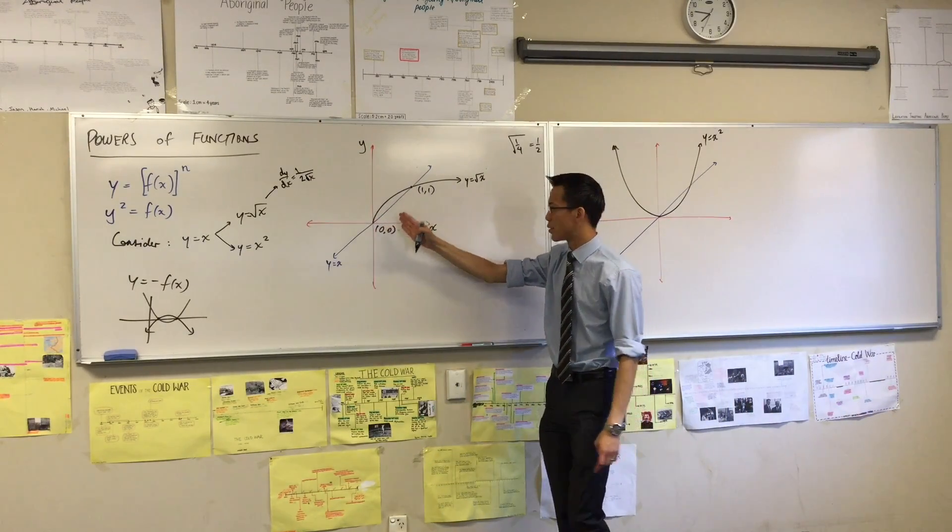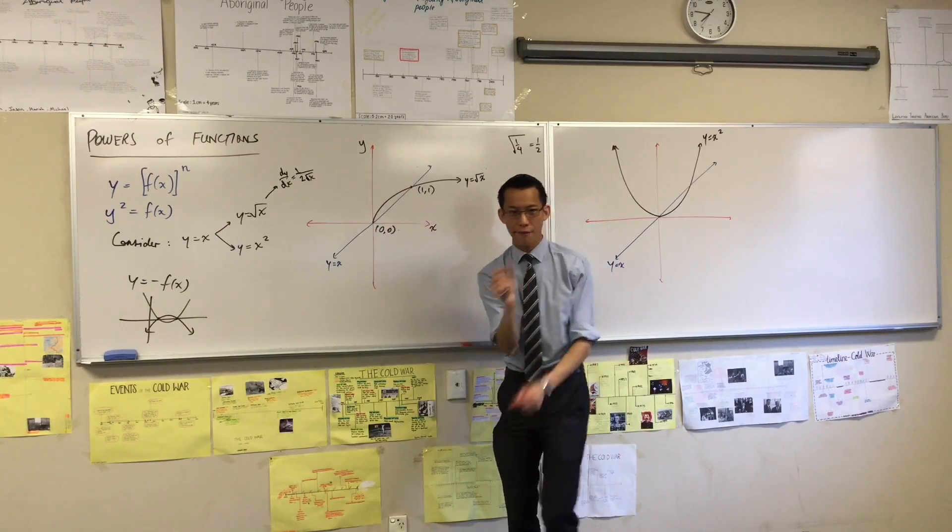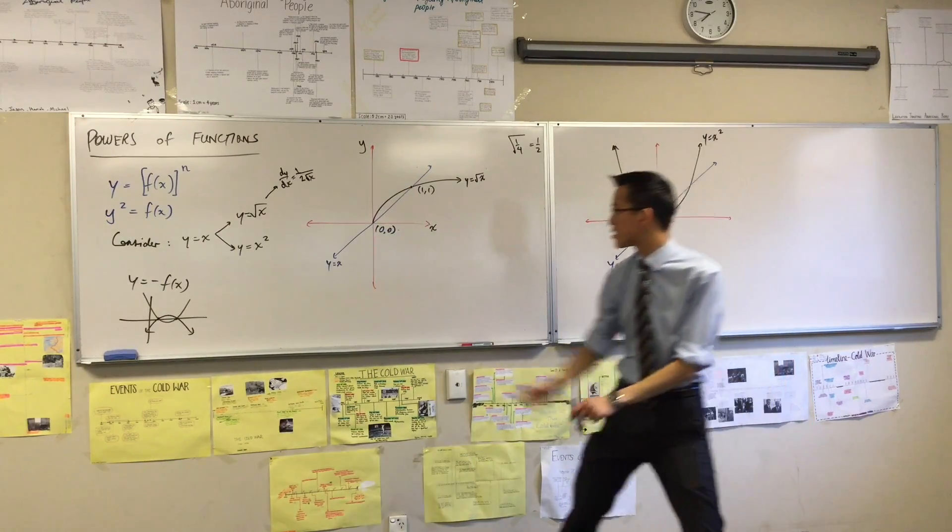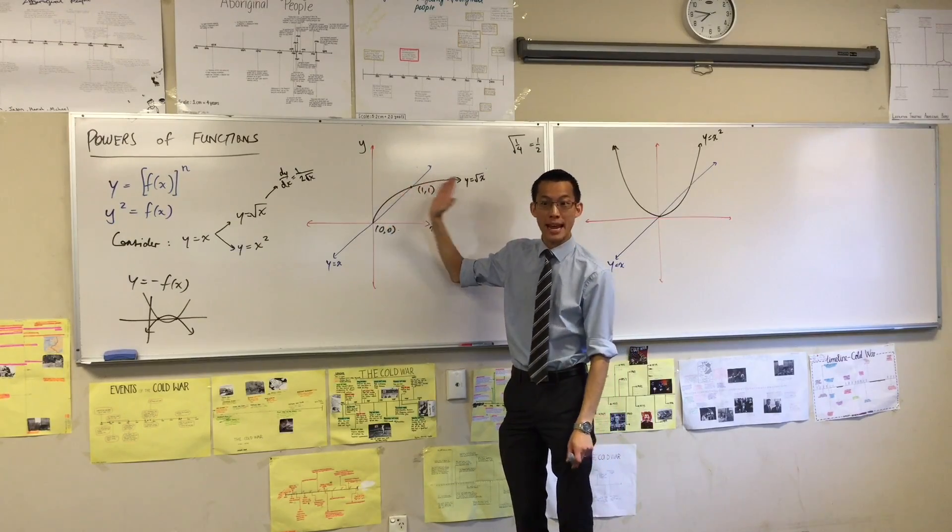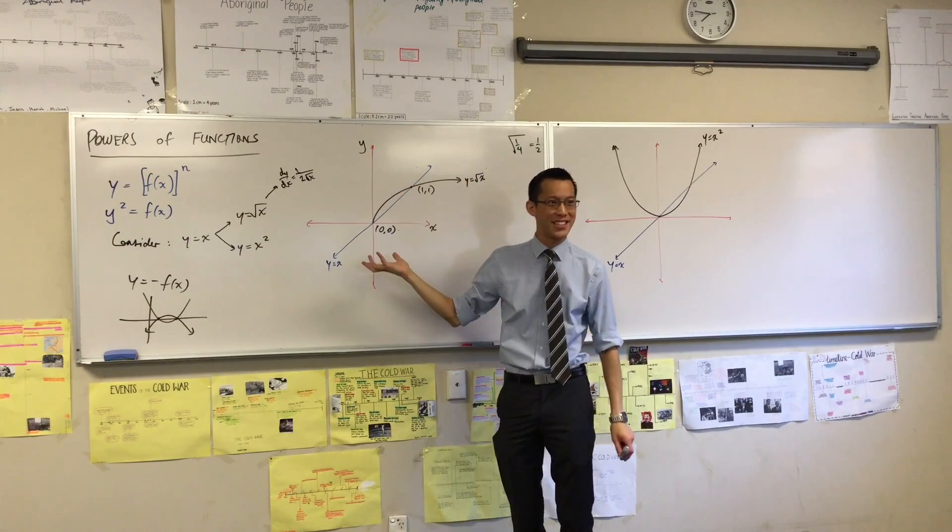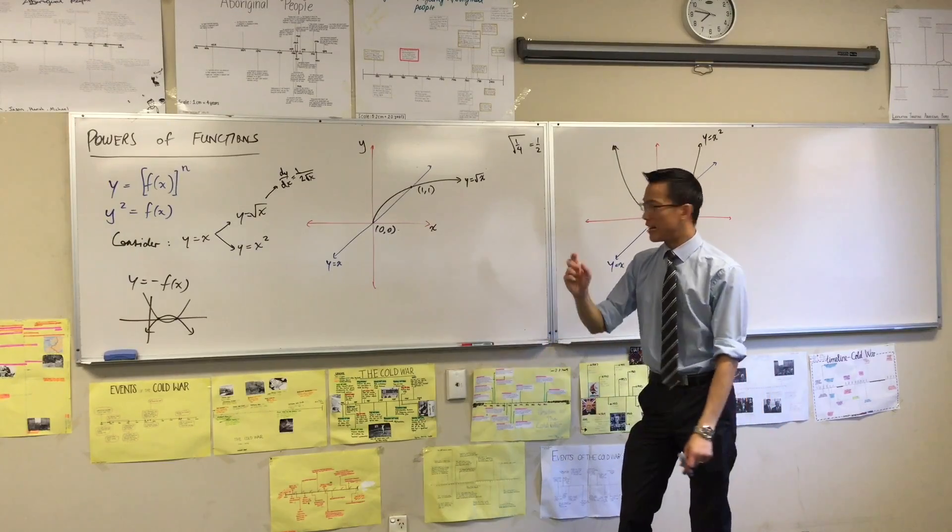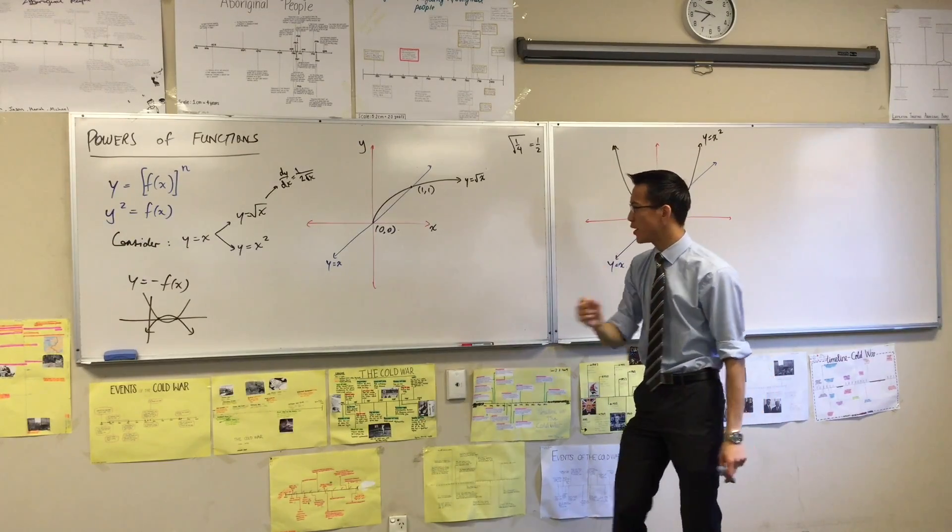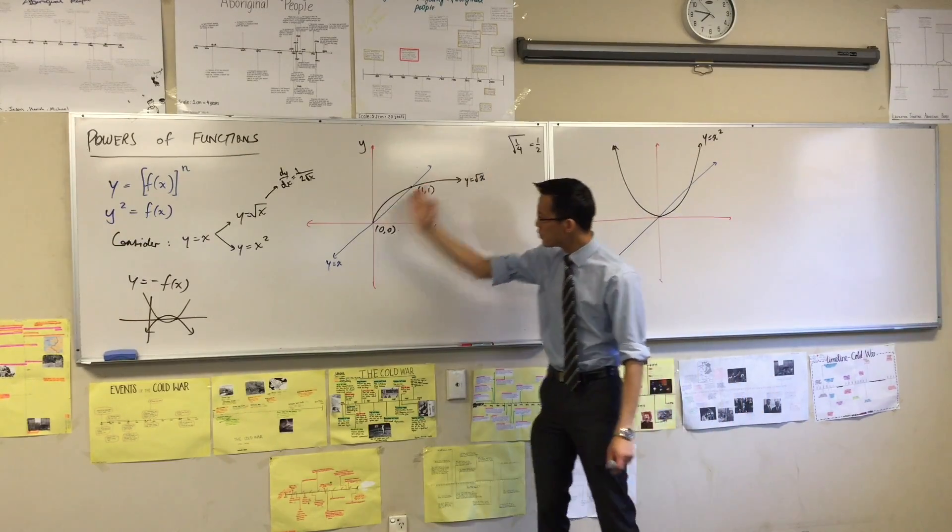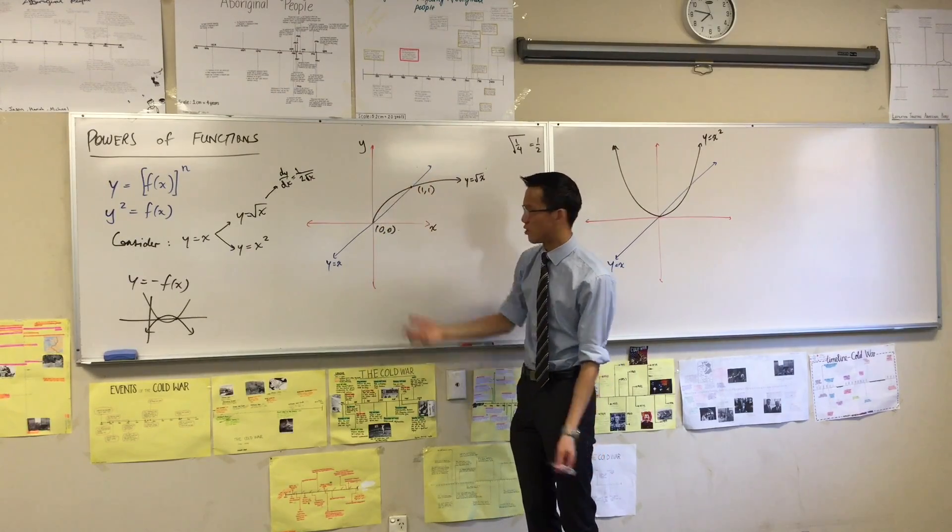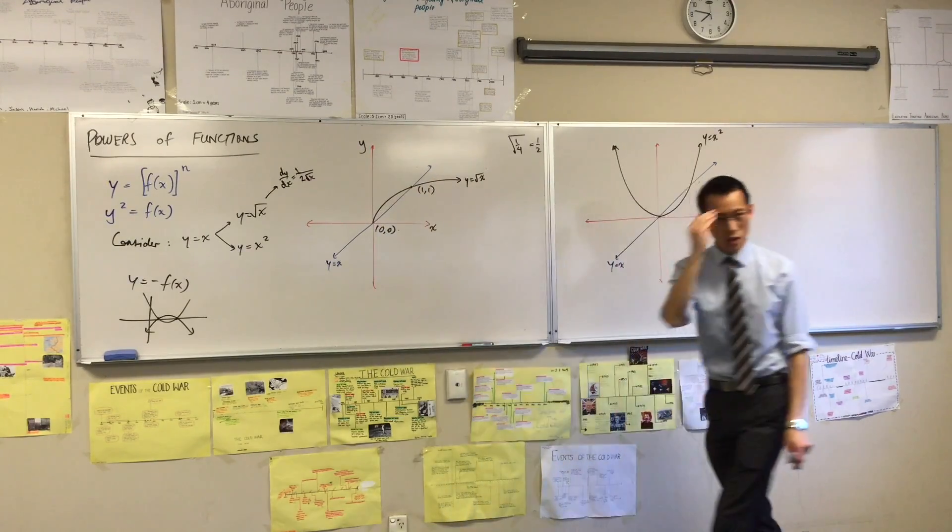There's no gradient here because if you think about rise over run, how far is it running? The answer is it's not running anywhere. If you were to draw a tangent here, it would be - actually I've already drawn a tangent there. Do you notice that? It's the y-axis. So there's no gradient there. Now that's really weird. It's really weird and that's important because anytime you get something like this, you're going to get your gradient becoming, well, undefined. Keep that in your mind.